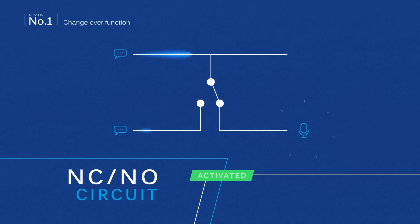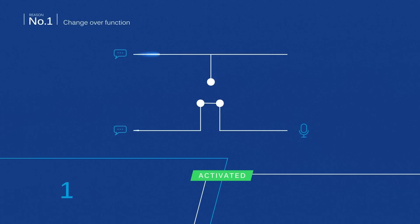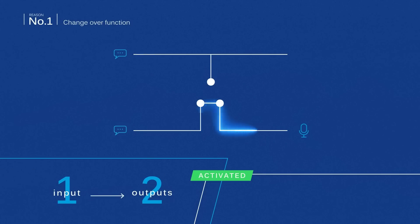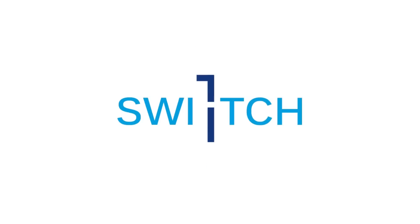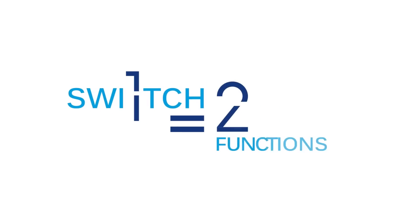By activating the switch, you turn the headphones off and activate the microphone, allowing you to communicate information without being distracted by the sounds from the headphones. One single switch controls two functions.